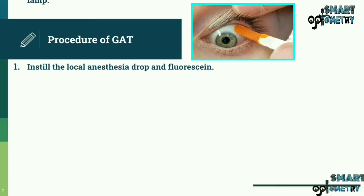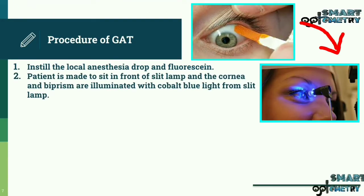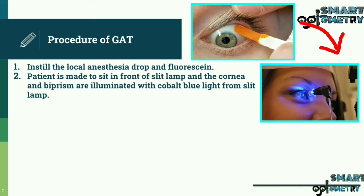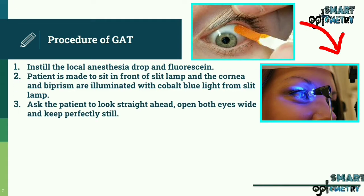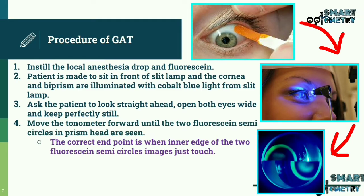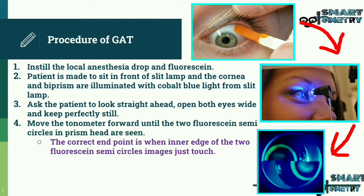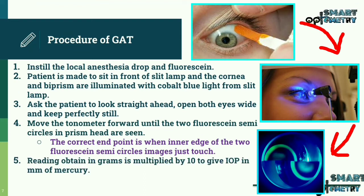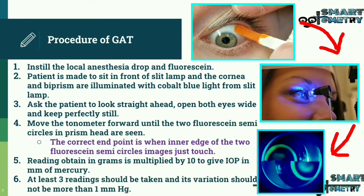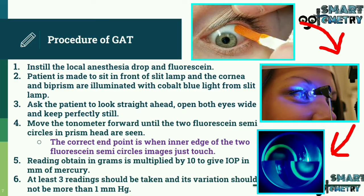Instill the local anesthetic drop and fluorescein. The patient is made to sit in front of the slit lamp, and the cornea and bi-prism are illuminated with cobalt blue light. Ask the patient to look straight ahead, open both eyes wide, and keep perfectly still. Move the tonometer forward until two fluorescent semicircles in the prism head are seen. The correct endpoint is when the inner edges of the two fluorescent semicircles just touch. The reading obtained in grams is multiplied by 10 to give IOP in mmHg. At least three readings should be taken, and their variation should not be more than 1 mmHg.